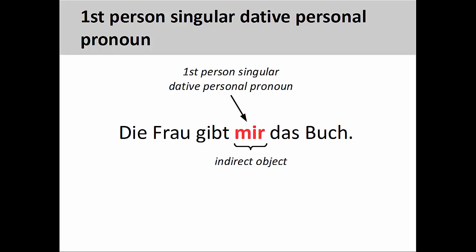Dative personal pronouns do not necessarily have to replace a noun or noun phrase. This happens in the first- and second-person singular and plural. In the sentence die Frau gibt mir das Buch — the woman gives the book to me — the first-person singular dative personal pronoun mir signals that I am the indirect object in the sentence, the recipient of the book.